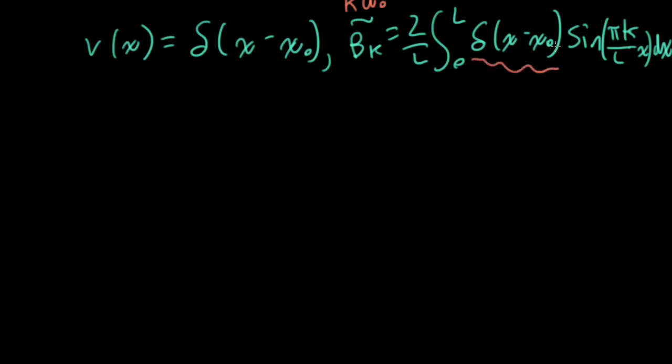The delta function only turns on, so to speak, at x equals x naught. It's zero every place else. So the only x that matters in this expression here is where x is equal to x naught. So in this expression here, I could replace the x with x naught. That turns into a constant that just pulls out in front.